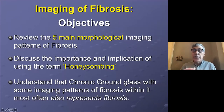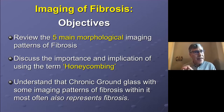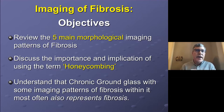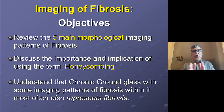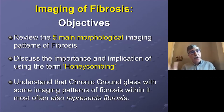The main objective is to go over the five main morphologic imaging patterns of fibrosis and talk about the importance of honeycombing in particular, because that one signifies a particular disease. We'll also understand that when looking at chronic ground glass, the presence and extent of fibrosis significantly changes your differential. This is a key consideration when approaching a chronic ground glass process.